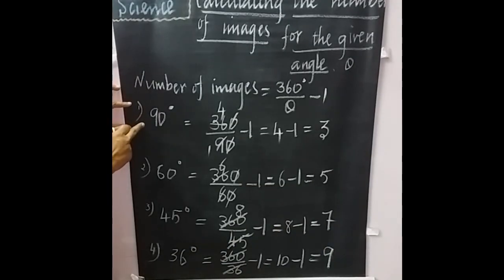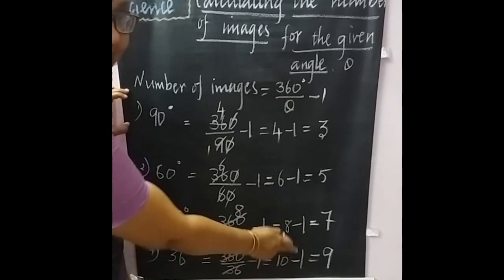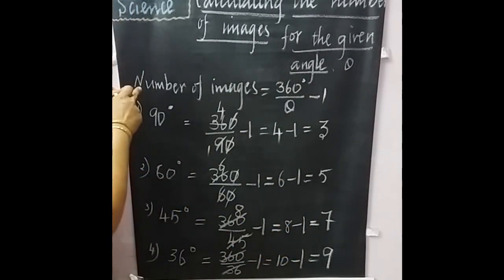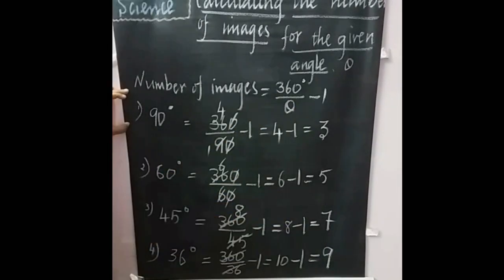Do you notice this? As the angle gets decreased, the number of images gets increased. Lesser the angle between the two mirrors, greater will be the number of images.